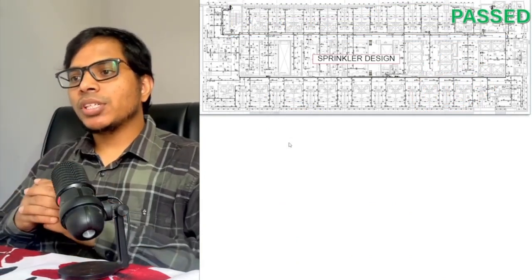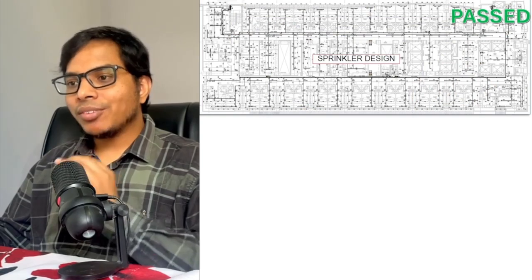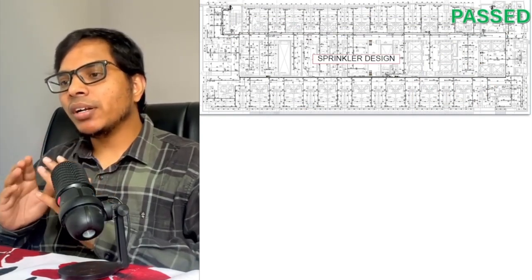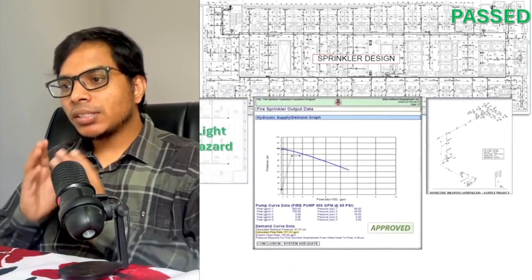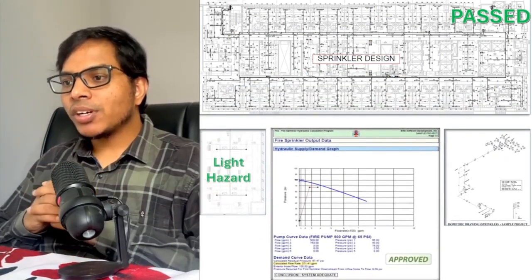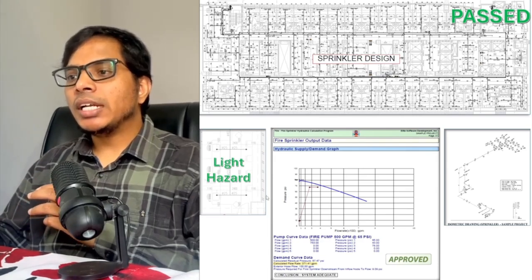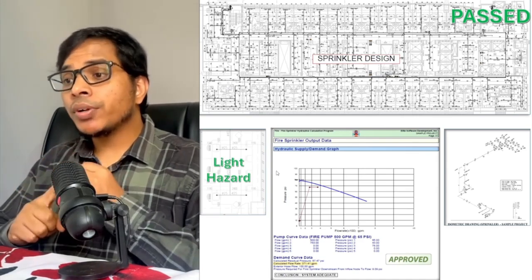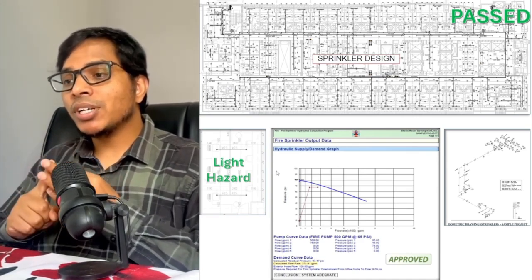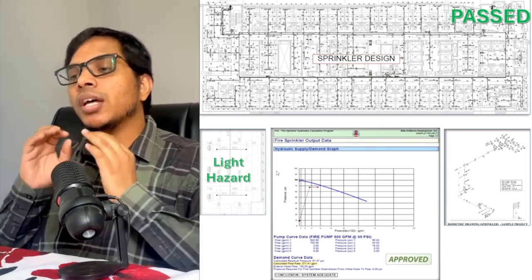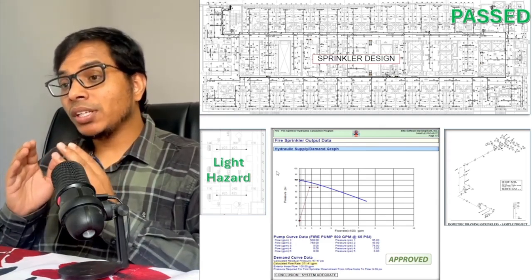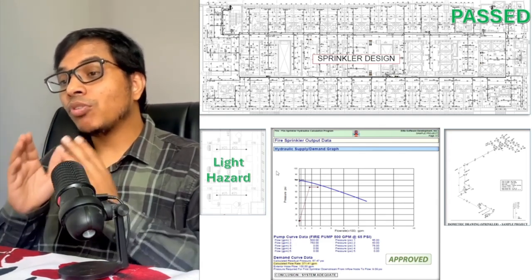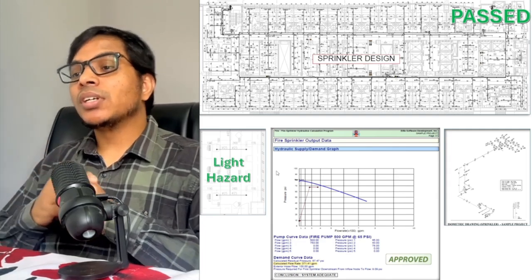This is a real project. I have removed the building name for privacy reasons, but everything else is exactly as submitted. This is a three-story office building, light hazard occupancy, standard sprinkler spacing, and the hydraulic calculations indicate everything is correct. The flow rate is adequate, pressure is sufficient, and the design density meets NFPA 13 requirements. The system was approved and installed — but watch what happens when I dig deeper into this design.